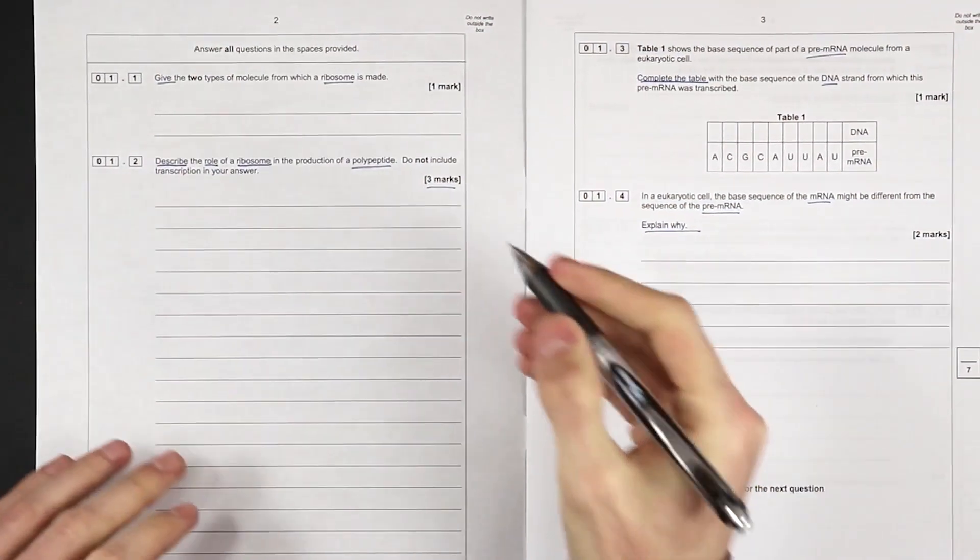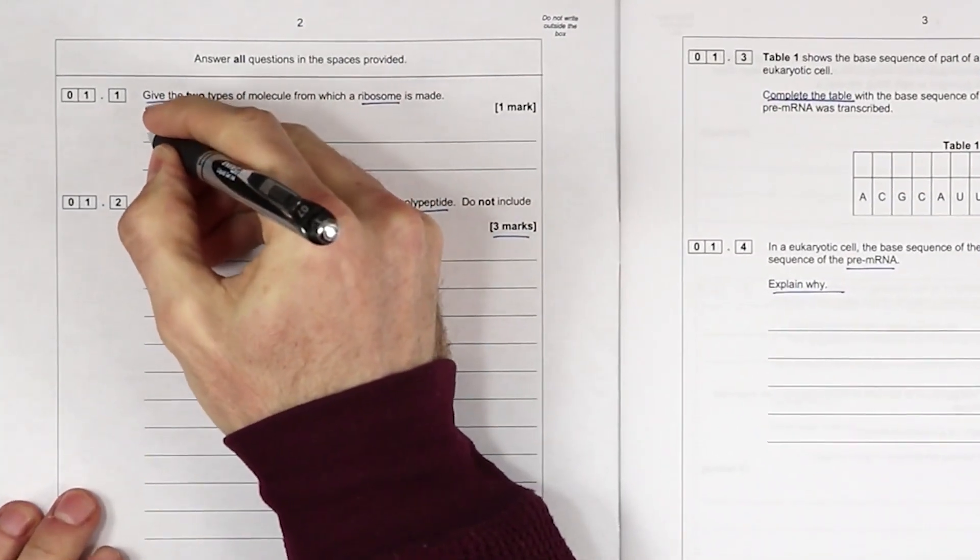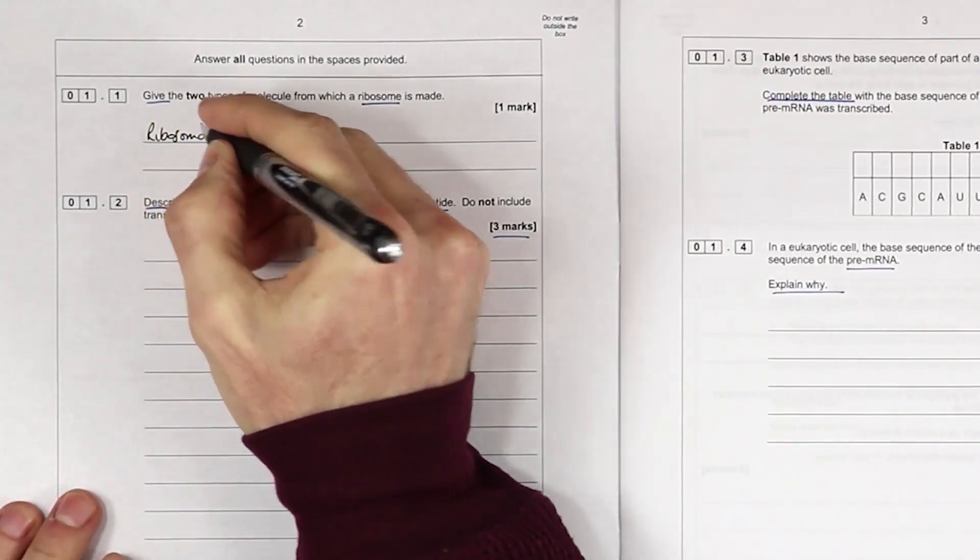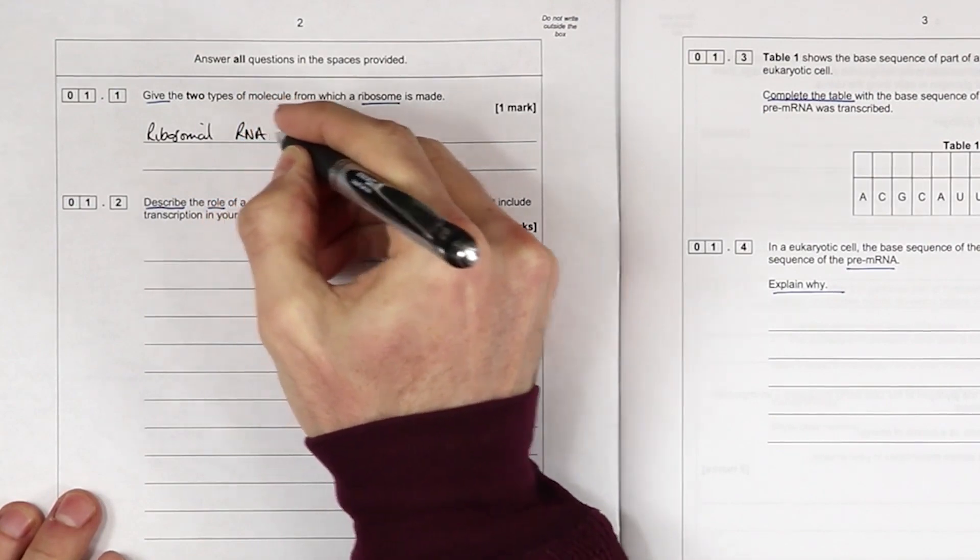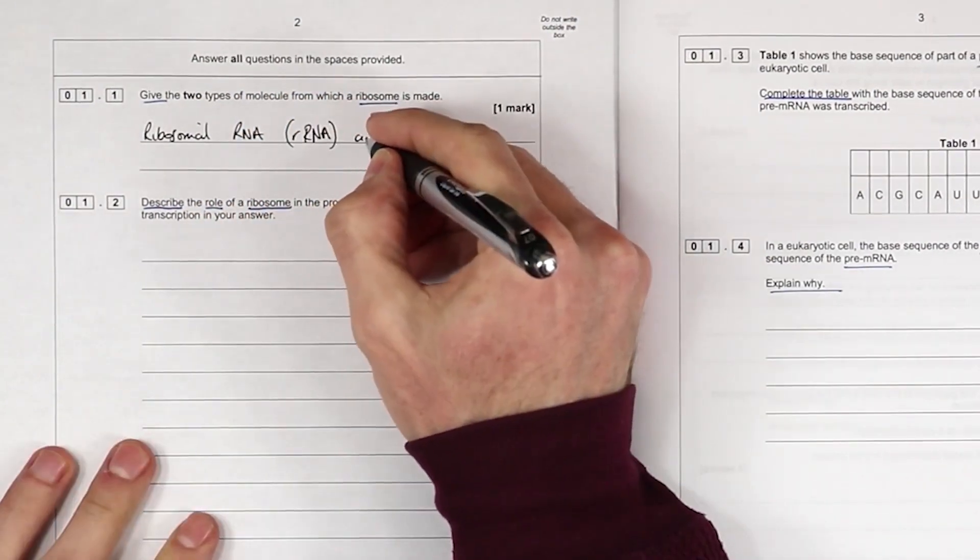The two molecules from which a ribosome is made are ribosomal RNA (rRNA) and proteins.